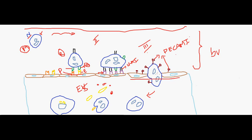Between the endothelial cells and the extravascular space there is a basement membrane. Leukocytes can pass through gaps between endothelial cells, but to cross the basement membrane they use special enzymes — collagenases and elastases — which allow them to travel through to the extravascular space where tissue injury or external endotoxins from bacterial cells are present.